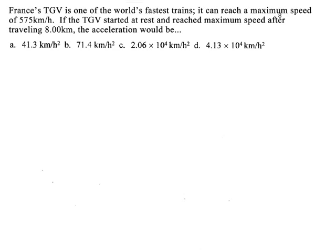Hello again. We're back to tackling kinematics questions and seeing if we can get comfortable with them. Today we're talking about trains. The TGV can get to a maximum speed of 575 kilometers per hour starting at rest.